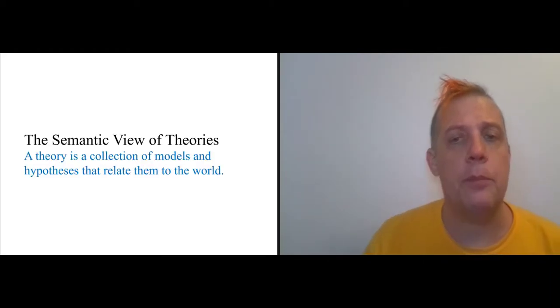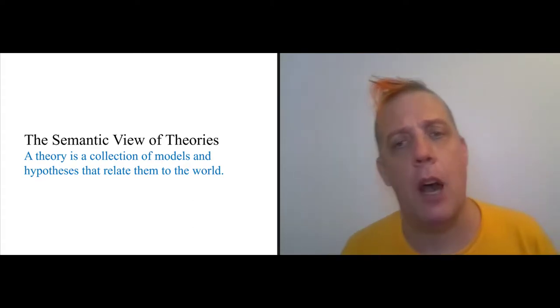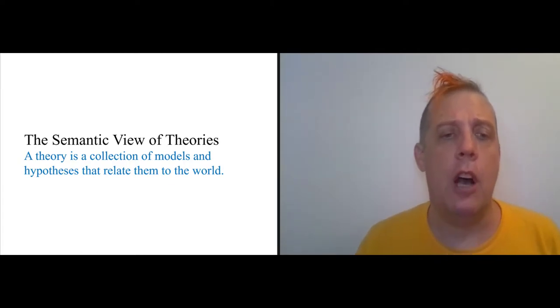I am utilizing something called the semantic view of theories, which says that a theory is fundamentally a collection of models and hypotheses that relate those models to the world. This understanding of the scientific method has become very important recently because so much of the science that is used for public decision making is model based. Everyone agrees that the scientific method is some kind of hypothesis testing, and then after that it becomes complicated. But this is a view of hypothesis testing that centers the idea of a model.